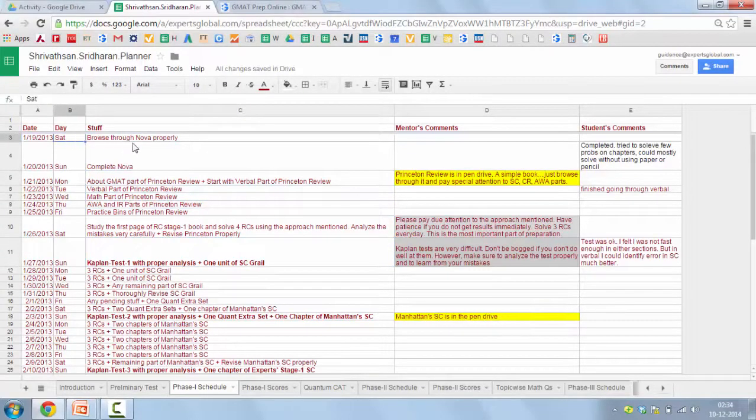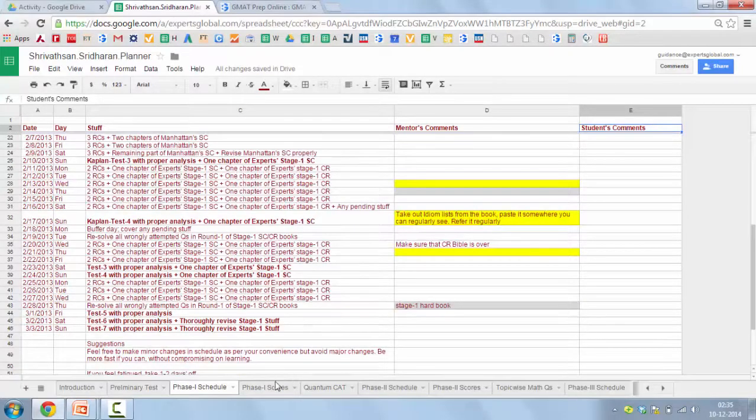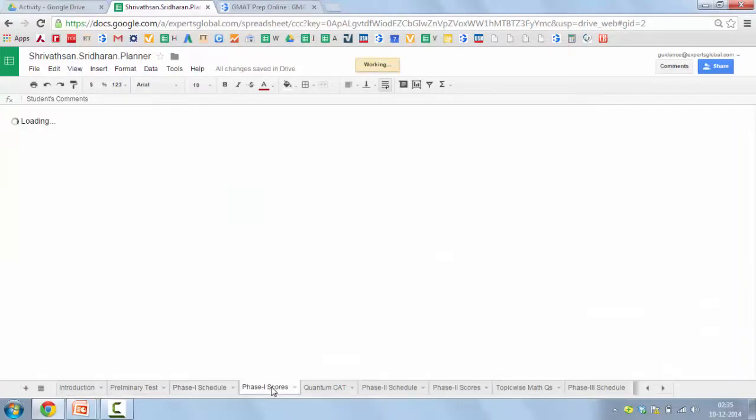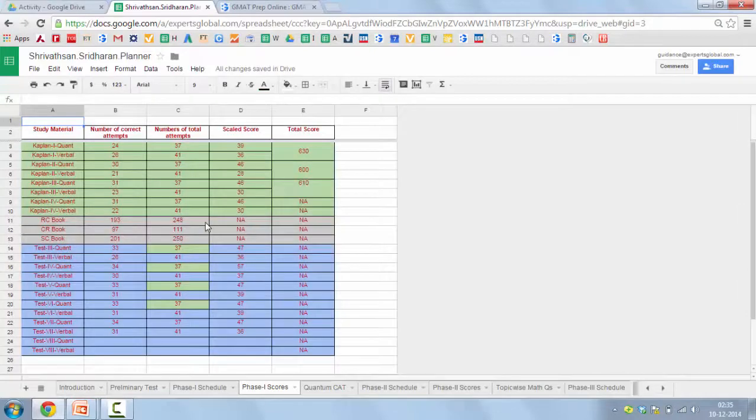So this plan very clearly suggests what one has to do on every single day of one's preparation. The date, the day, the stuff that one has to do on every single day, there's a column for the mentor's comments, and there's a column for the student's comments. This is the phase one schedule, and there is a relevant score sheet for stage one of preparation. On a weekly basis, generally one has to keep taking the test, and one has to keep on updating the score sheet.